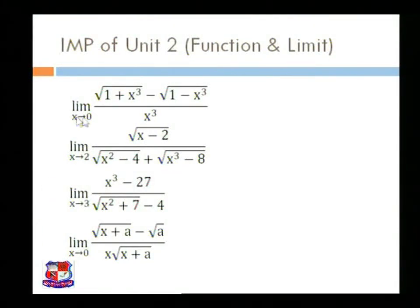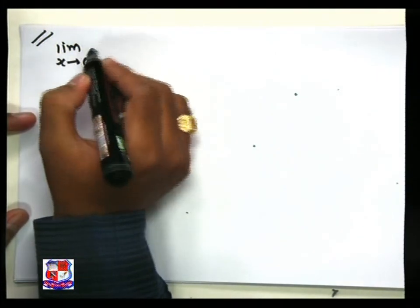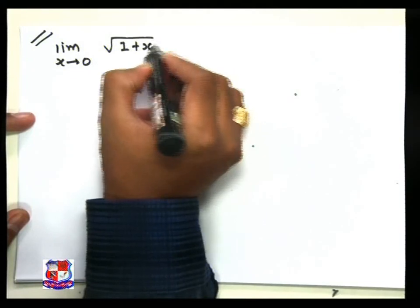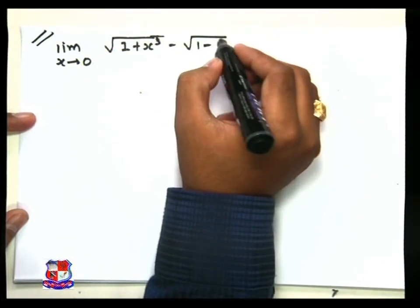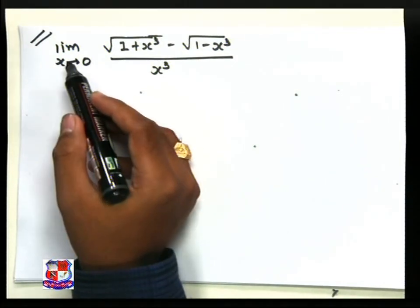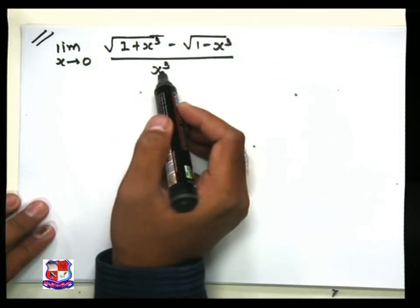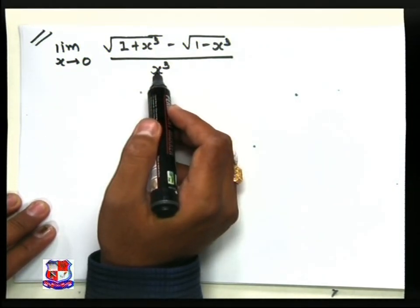We write down the first question: limit x tends to 0 of under root of (1 plus x cube) minus under root of (1 minus x cube), divided by x cube. Our first step is to replace x by 0, but our denominator becomes 0. So we cannot put x equal to 0 directly. Our next step is to use the rationalization method.